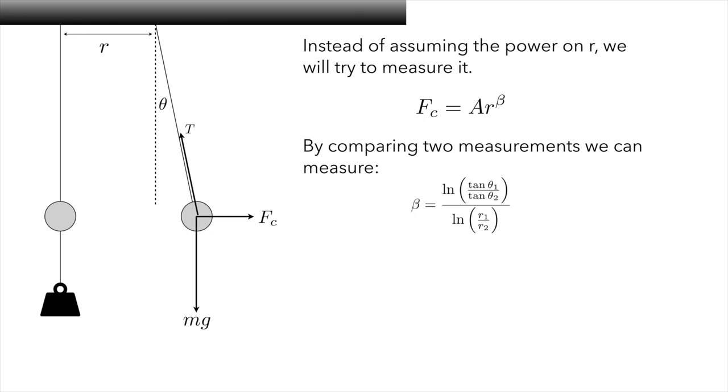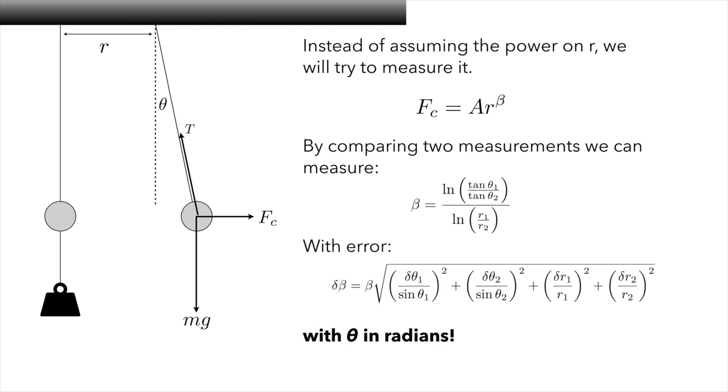We can actually measure the error in the power beta. That expression is given here and in your lab manual where delta indicate the uncertainties on these measurements. Note, and this is very important, that you must be measuring theta in the units of radians and not degrees for this error formula to work out. Notice also the beta in front, so this is essentially determining the fractional error in beta.